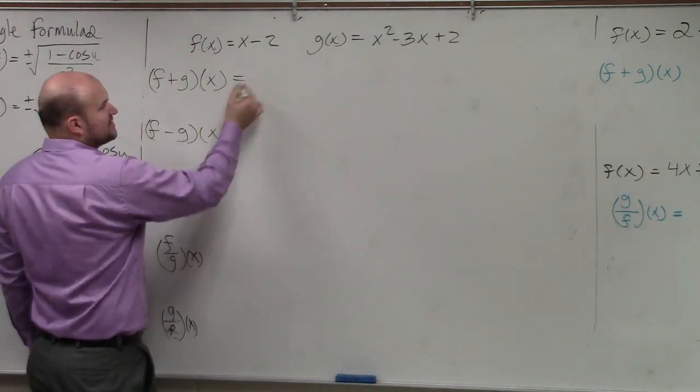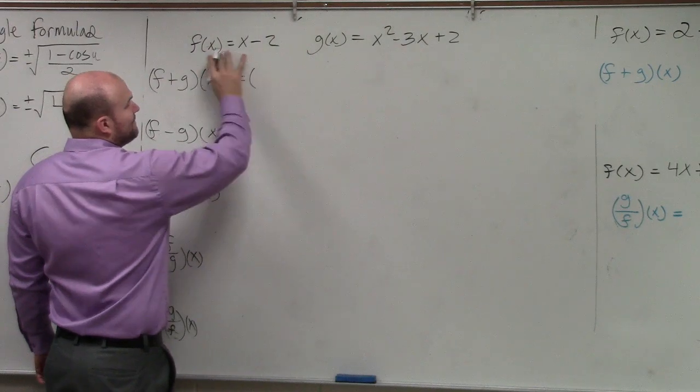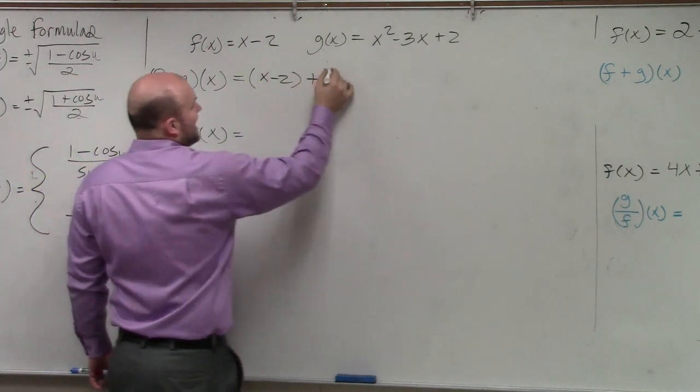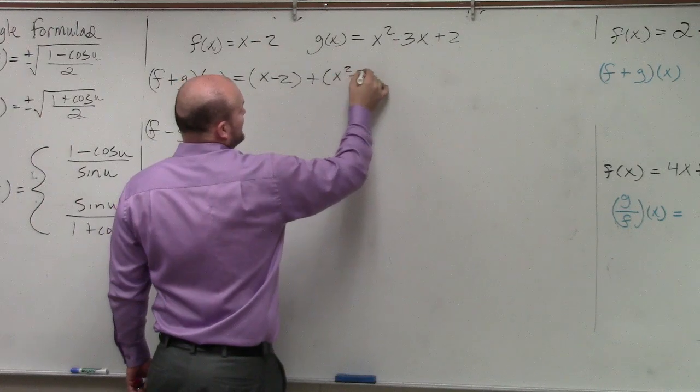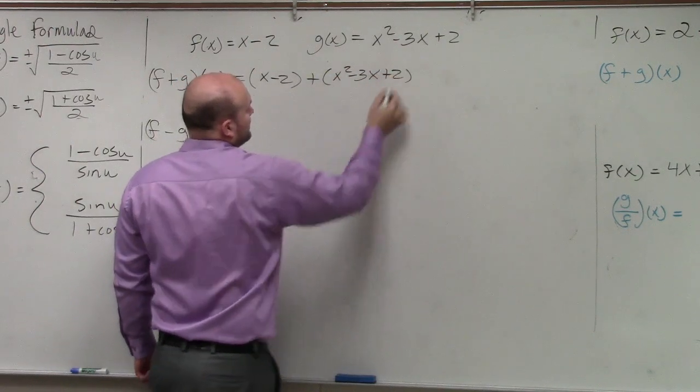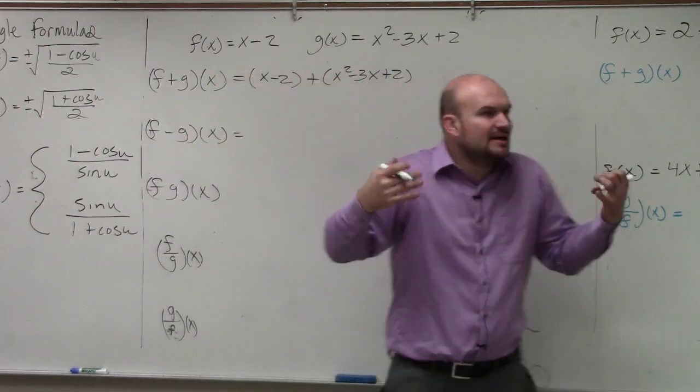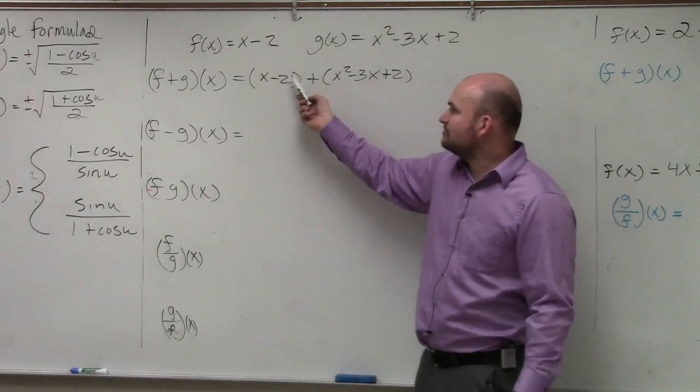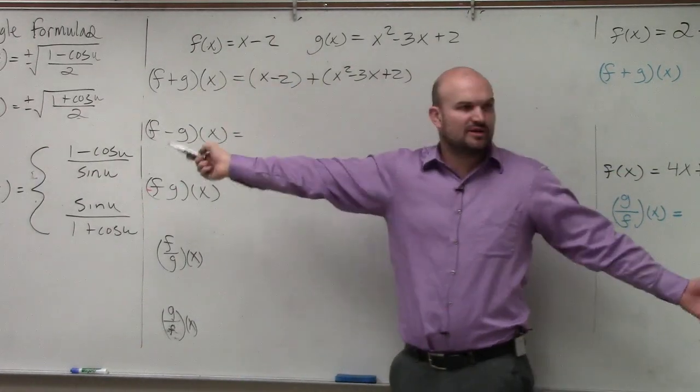So anyways, all this is really saying is for us to add f of x, which is x minus 2, plus add g of x, which is x squared minus 3x plus 2. That's all we're doing. Now, I recommend when you're replacing x minus 2 in for f of x, I like to put in parentheses.